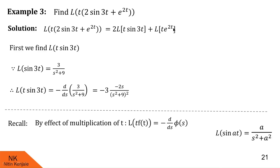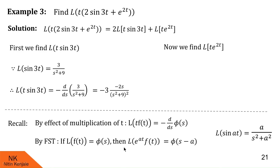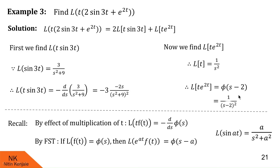Now we proceed for Laplace of t into e raised to 2t using first shifting theorem. Here f of t is t, and Laplace of t is 1 upon s square, which is our phi of s. By first shifting theorem, Laplace of e raised to 2t into t is phi of s minus 2, which becomes 1 upon (s minus 2) squared. We substitute both values into the RHS to complete the solution.